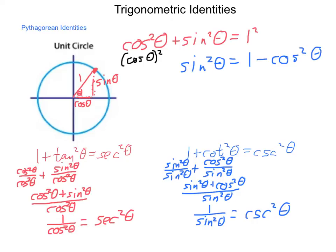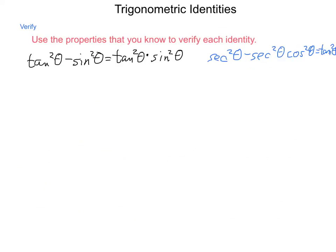Anytime you need to prove something is true, you can build on anything you've established previously. Now that we've proved these identities are true, we can use them to prove further ones. Let's use known properties to verify the identity: tangent squared theta minus sine squared theta equals tangent squared theta times sine squared theta.